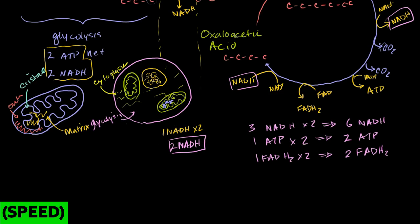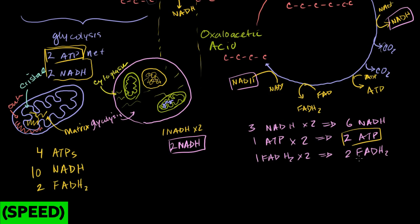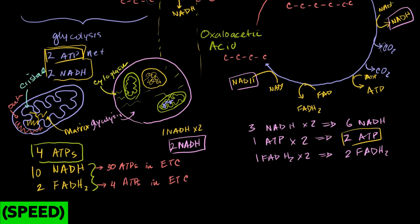We can now count whether we get to the 38 ATPs promised by cellular respiration. We've directly produced four ATPs total (two from glycolysis, two from the Krebs cycle), and we have ten NADHs and two FADH2s. Each NADH in the electron transport chain produces three ATPs, so ten NADHs produce 30 ATPs. Each FADH2 produces two ATPs, so two FADH2s produce four ATPs. That gives us 34 from the electron transport chain, plus 4 directly — totaling 38 ATPs.